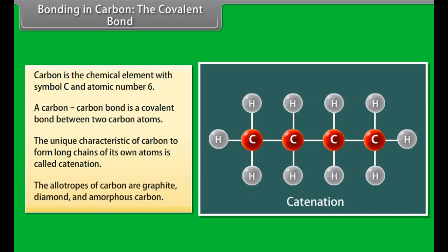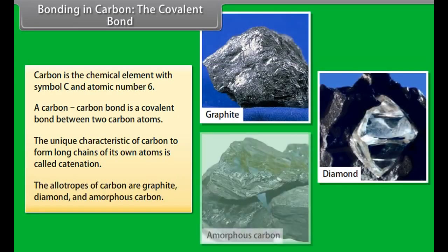The allotropes of carbon are graphite, diamond, and amorphous carbon.